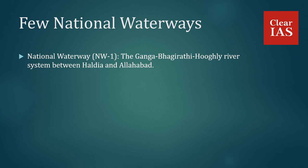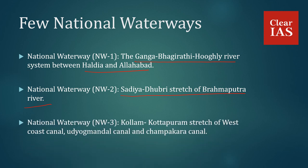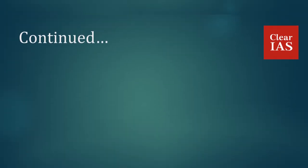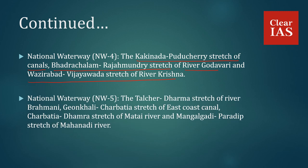Few Important National Waterways: National Waterway 1 — the Ganga-Bhagirathi-Hugli river system between Haldia and Allahabad. National Waterway 2 — Sadia-Dhubri stretch of the Brahmaputra River. National Waterway 3 — Kollam-Kottapuram stretch of West Coast Canal, Udyogmandal Canal and Champakara Canal. National Waterway 4 — the Kakinada-Pudicherry stretch of canals, Bhadrachalam-Rajahmundry stretch of the river Godavari, and Wazirabad-Vijayawada stretch of the river Krishna. National Waterway 5 — the Talcher-Dhamra stretch of river Brahmani, Geonkhali-Charbatia stretch of East Coast Canal, Charbatia-Dhamra stretch of Mahanadi river, and Mangalgadi-Paradeep stretch of Mahanadi river.